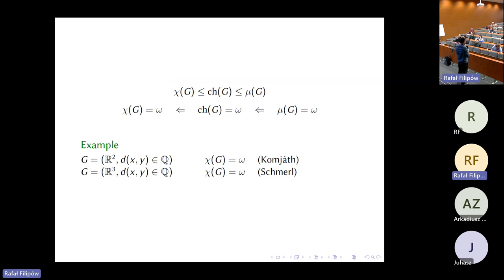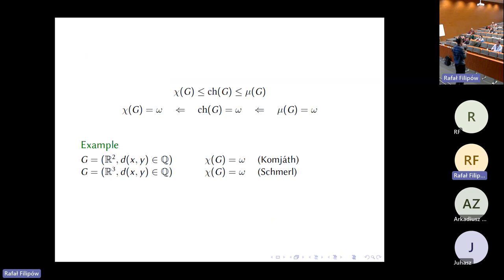Another example: three-dimensional Euclidean space ℝ³ with the same edge relation — two points connected if their distance is rational. Although it looks the same, the situation is different and the proof is more subtle. The reason: in the plane, given two points and two distances, there are only finitely many (just two) intersection points on two circles. In three dimensions, the intersection is already infinite, making the proof harder.